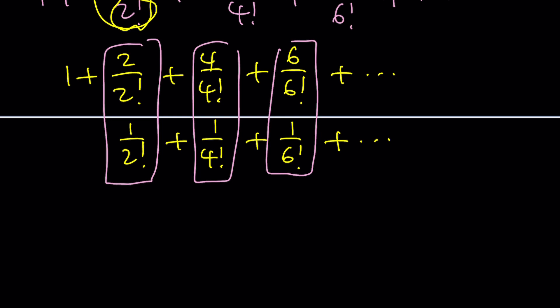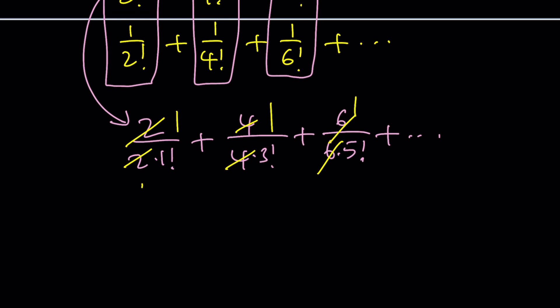But why are we writing it this way? Because if you think about it you're probably going to realize the terms in the top row can be simplified. For example 2 over 2 factorial we can write it as 2 over 2 times 1 factorial, 4 over 4 times 3 factorial, 6 over 6 times 5 factorial and so on and so forth. And now we can go ahead and cancel out the 2, the 4, and the 6 so that this kind of gives us the sum of odd factorial reciprocals like 1 over 1 factorial, 1 over 3 factorial, 1 over 5 factorial and so on and so forth.